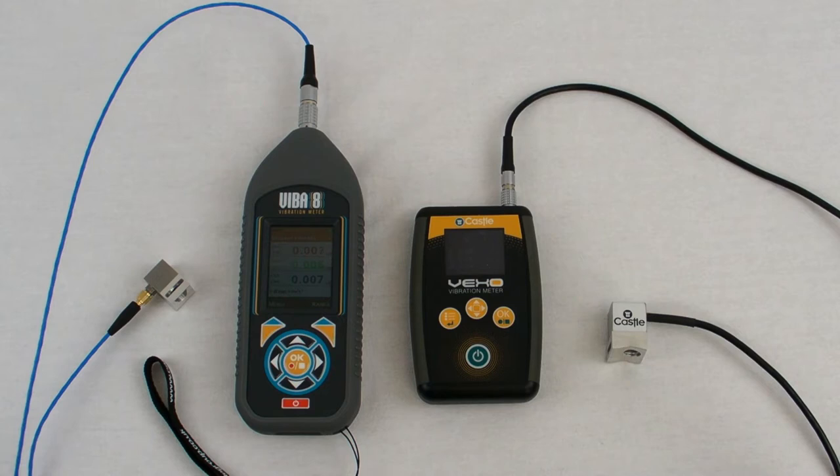The VEB A8 also has a brighter screen, more memory, and a few other features than the VEXO, such as axis mapping, which is changing the orientation of X, Y, and Z. And this can be very useful for aligning your measurements to the HSE guidebook, both for hand arm and for whole body vibration.